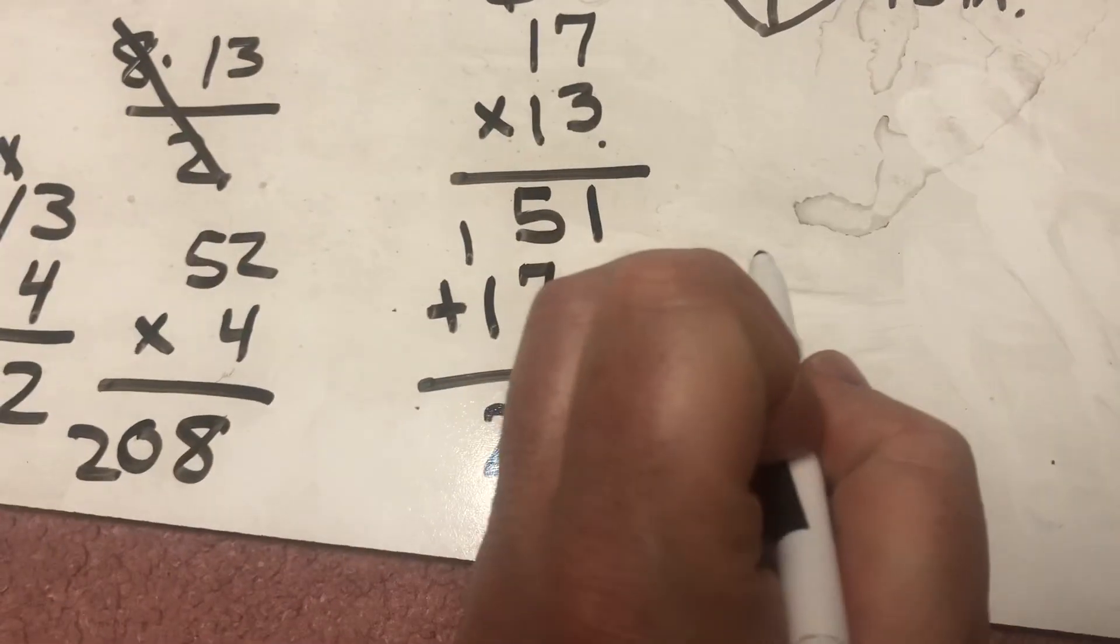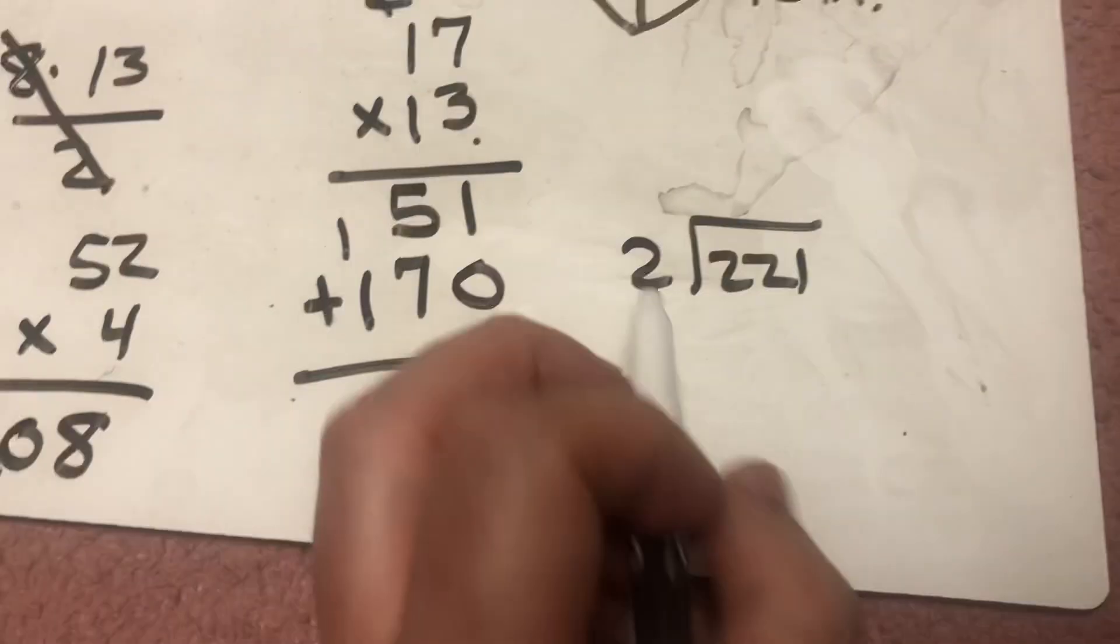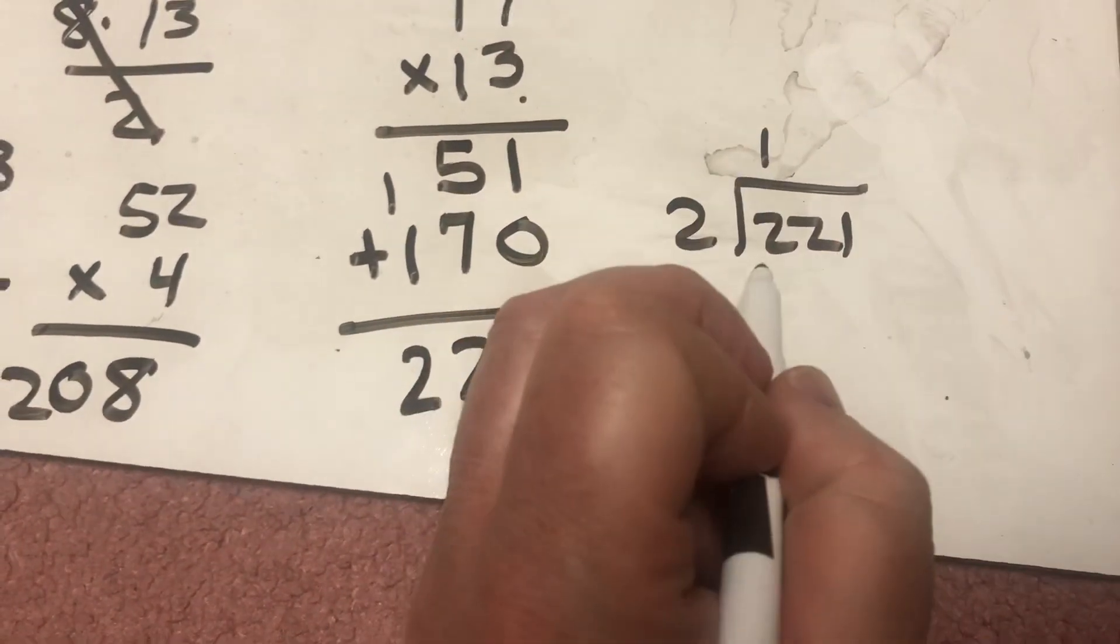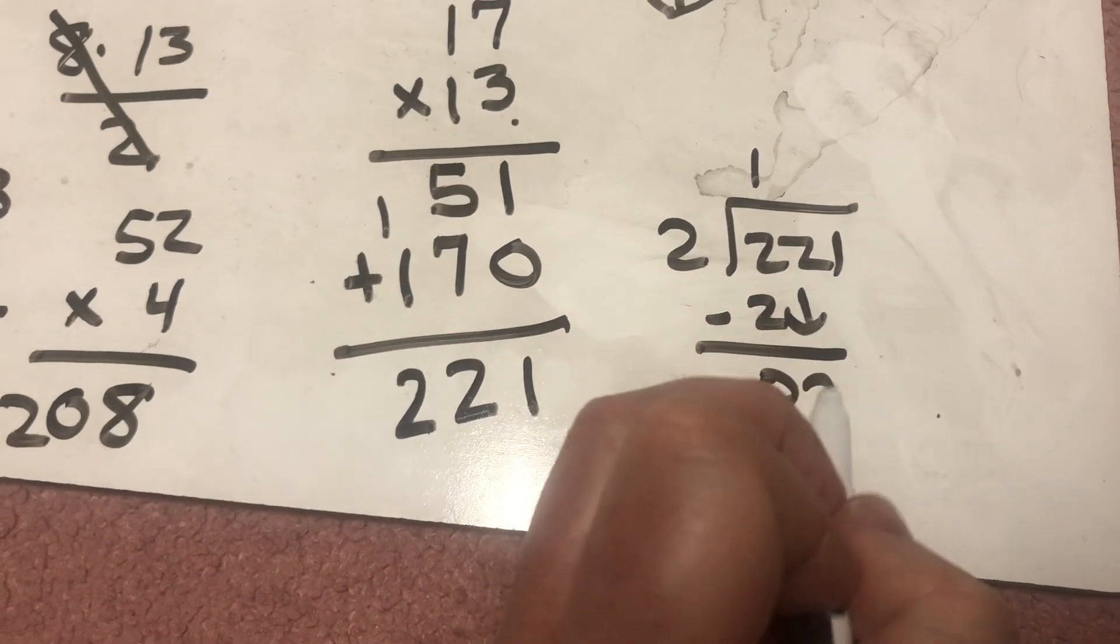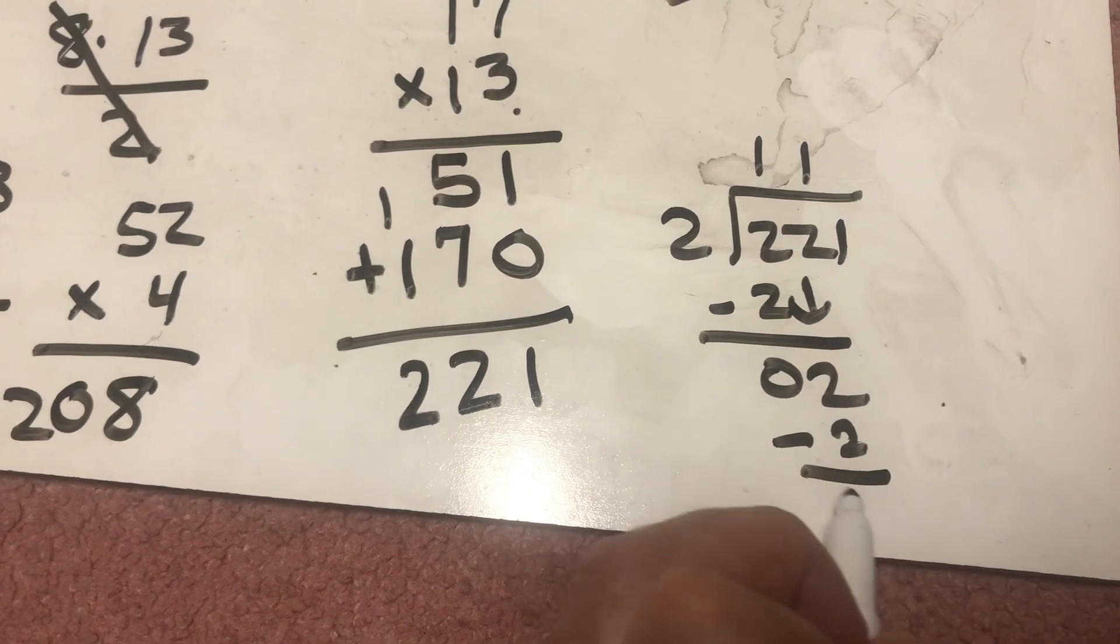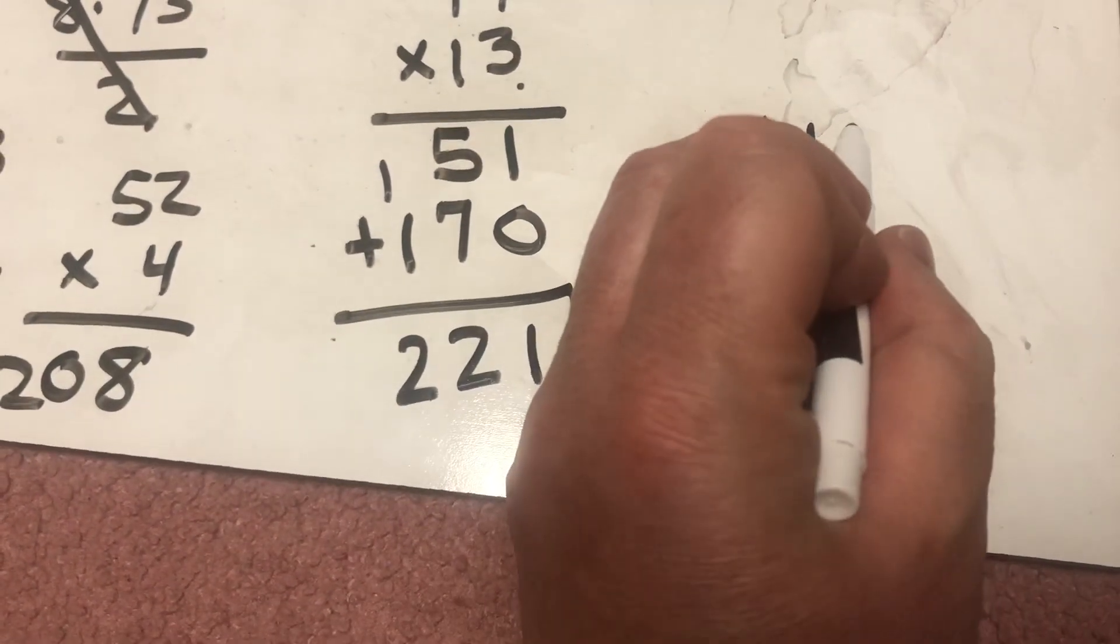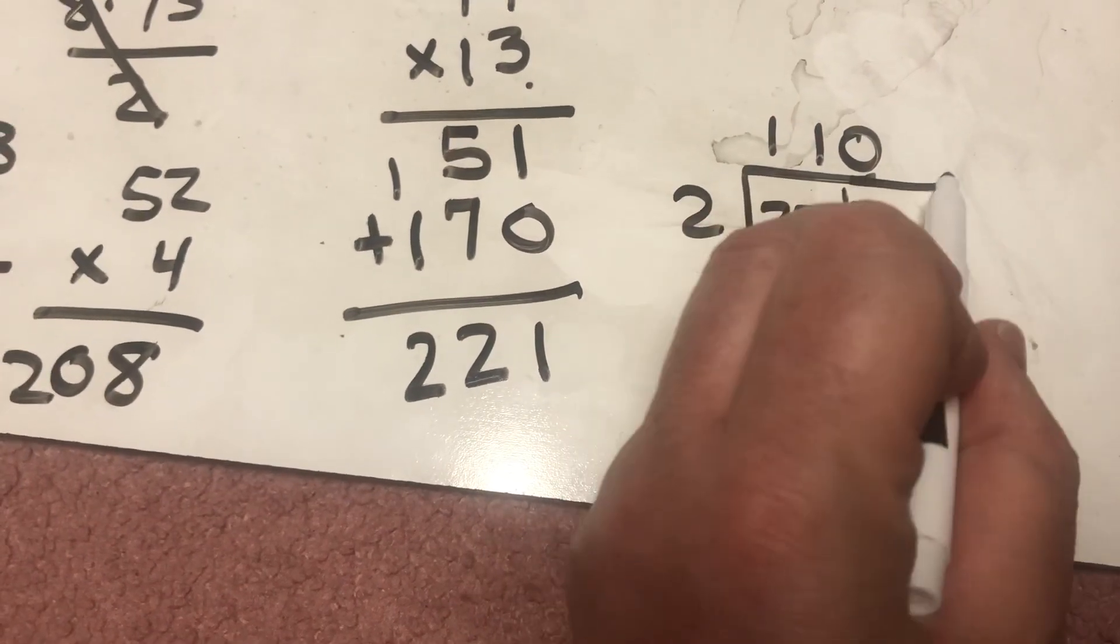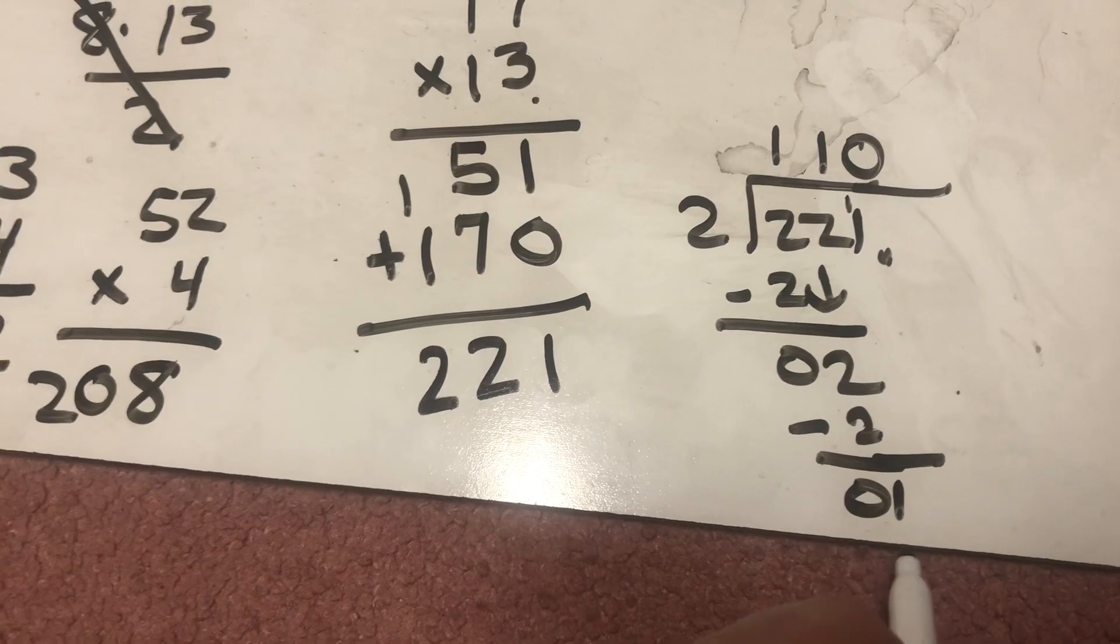But then I've got to divide that by 2. I've got to cut that in half. So, I'm doing the division. 2 goes into 2 once. 1 times 2 is 2. 2 minus 2 is 0. Drop the 2. 2 goes into 2 once. 1 times 2 is 2. 2 minus 2 is 0. Drop the 1. 2 cannot go into 1. So, that's a 0. I know that 0 times 2 is 0. 1 minus 0 is 1.